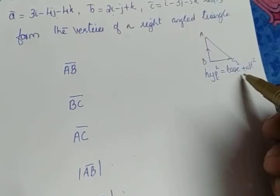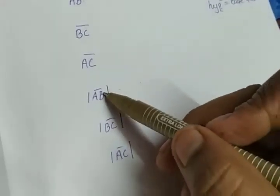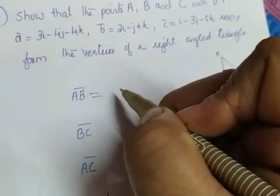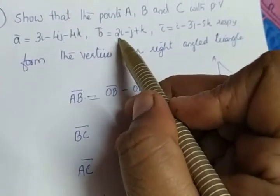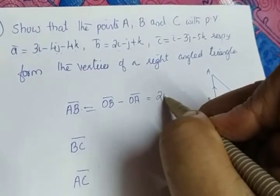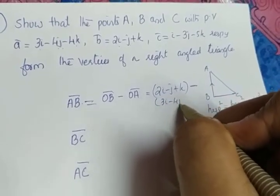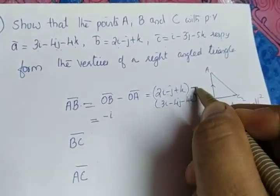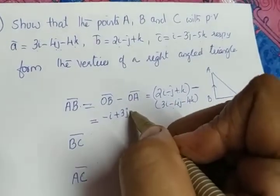We will find the vectors for the three sides, calculate their magnitudes, and check whether they satisfy the Pythagorean theorem. Moving with vector AB: vector AB is the position vector of B minus position vector of A. Position vector of B is 2i minus j plus k and position vector of A is 3i minus 4j minus 4k. So: 2i minus 3i gives minus i, minus j minus minus 4j gives plus 3j, and k minus minus 4k gives plus 5k.